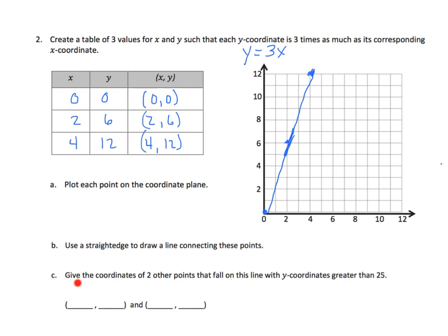Now, it says give the coordinates of two other points that fall on this line with a y coordinate greater than 25. So, we need to multiply something times three to get an answer greater than 25. So, let's try ten. Ten is easy to work with. Ten times three is 30. That works because the y coordinate, 30, is greater than 25. We can do another one. Let's do 12. And you can pick any values you'd like for x. And three times 12 is 36.